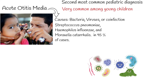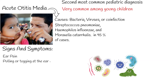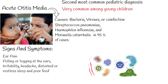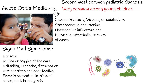Although one of the best indicators for otitis media is otalgia — pain in the ear — many children with otitis media can present with nonspecific signs and symptoms, which can make the diagnosis challenging. These symptoms include pulling or tugging at the ears, irritability, headache, disturbed or restless sleep, and poor feeding. Fever is present in 70% of cases, but it is typically low-grade.